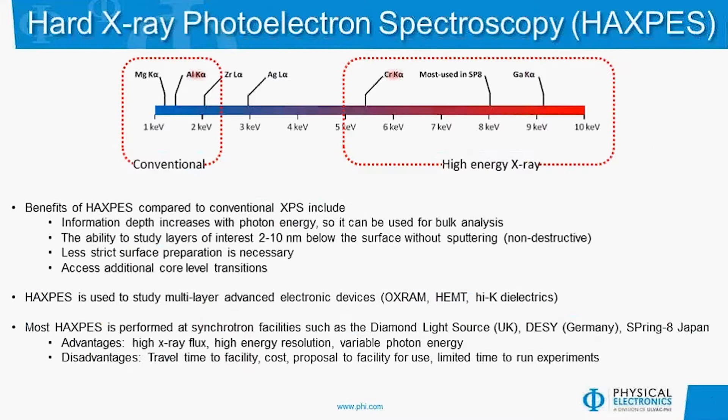In general, photon energies of 2 keV and below are considered conventional XPS, which would include magnesium, aluminum, and zirconium X-ray sources. Hard X-ray photoelectron spectroscopy, or HAXPES, covers photon energy ranges between 5 and 10 keV, which would include chromium and gallium X-ray sources. When the photon energy is increased, so does the information depth, so HAXPES can be used for more bulk analysis.